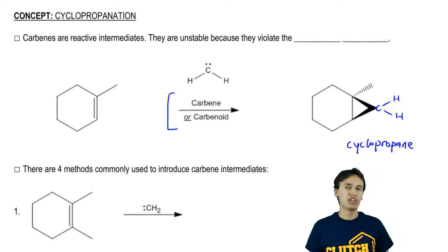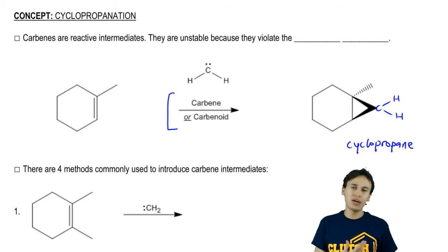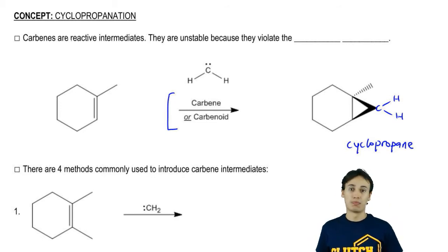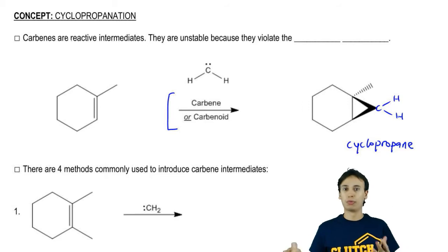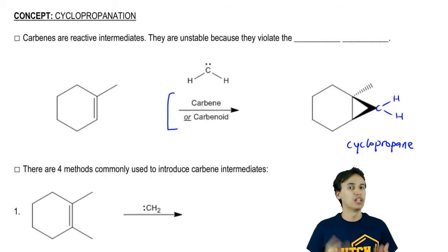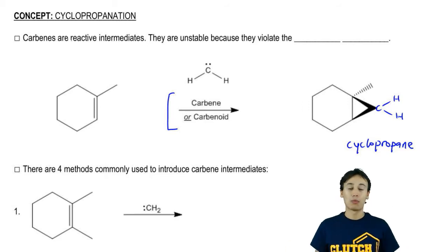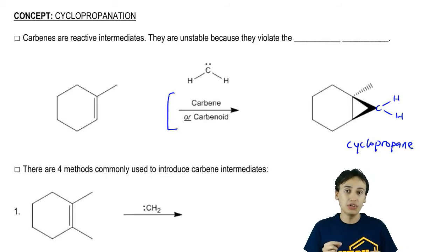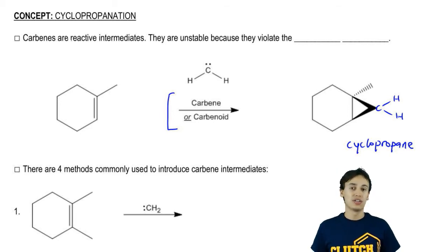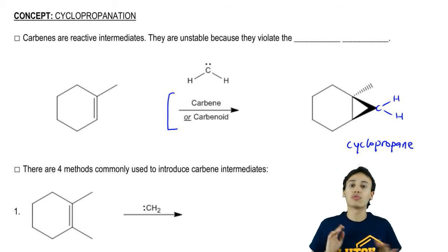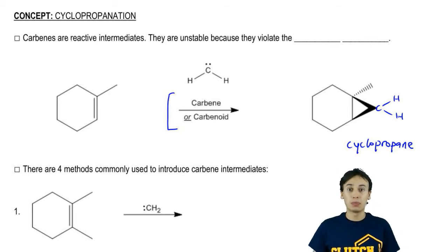You might be wondering, why would a double bond want to react with a methyl group? I don't remember methyl groups being strong electrophiles. Well, that's exactly why we need a carbene or a carbenoid, because methyls aren't reactive — but carbenes are.